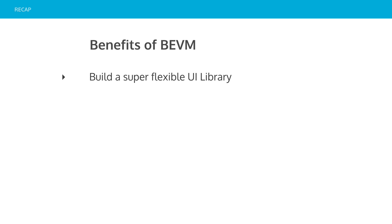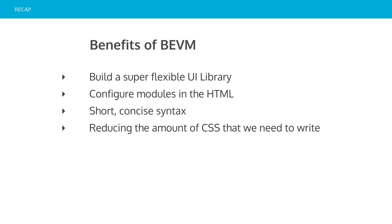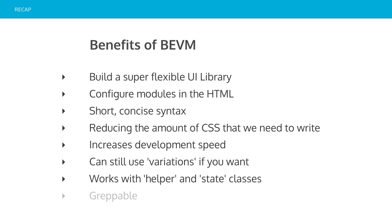To recap the benefits: you can build a super flexible UI. We haven't really used modifiers much outside of our UI library because you really don't need to — we're trying to replace most of our custom code with our UI library. You can configure modules in the HTML rather than in CSS, creating special snowflakes every time you need something. It's short, concise syntax without a lot of repetition. It reduces the amount of CSS you need to write — once it's written you rarely have to go back and revisit it. It increases development speed, and you can still use variations if you want, though they're almost redundant now.